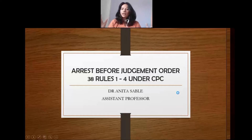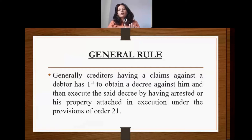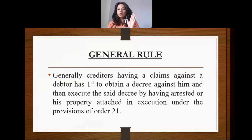Now let us see what happens in this case. Generally, the general rule is that if a decree is passed against someone, and we have to execute the decree — if there is an obstacle in execution — then we arrest them. But in some special circumstances, even before judgment, i.e., during the pendency of the litigation itself, we can get the defendant arrested.